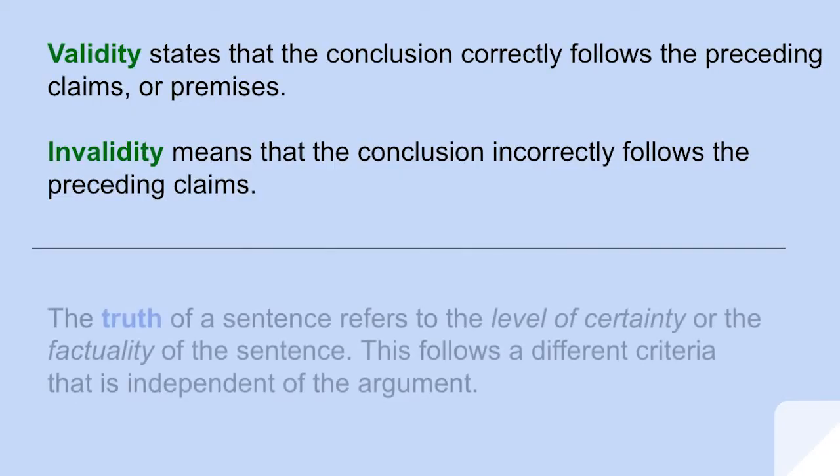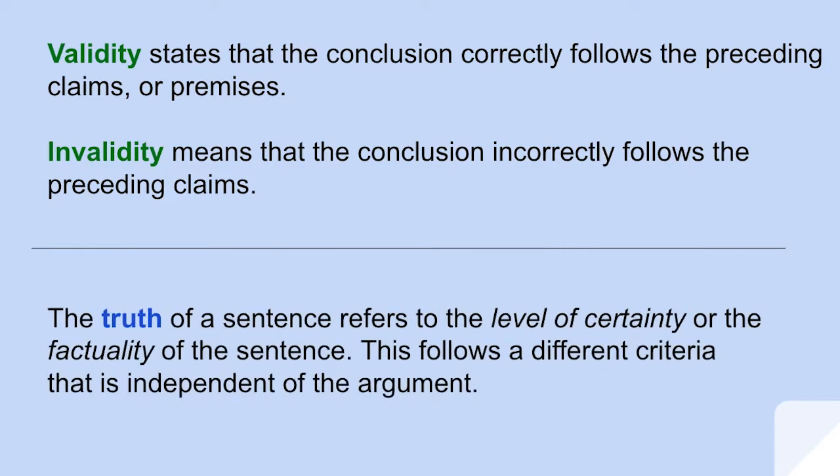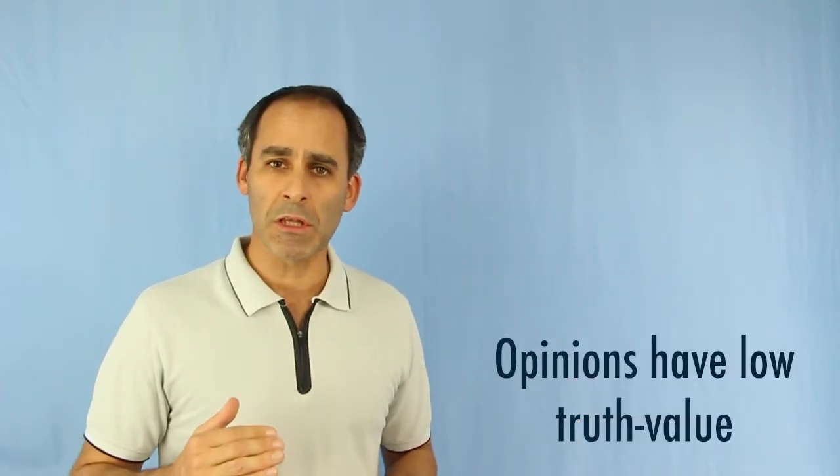The validity is drawn from the preceding premises, while the truthfulness has to do with the quality of the sentence that you're looking at. This is what we call the truth value in a sentence, and the truth value depends on many different factors. Things like pure opinion are going to have a very low truth value.